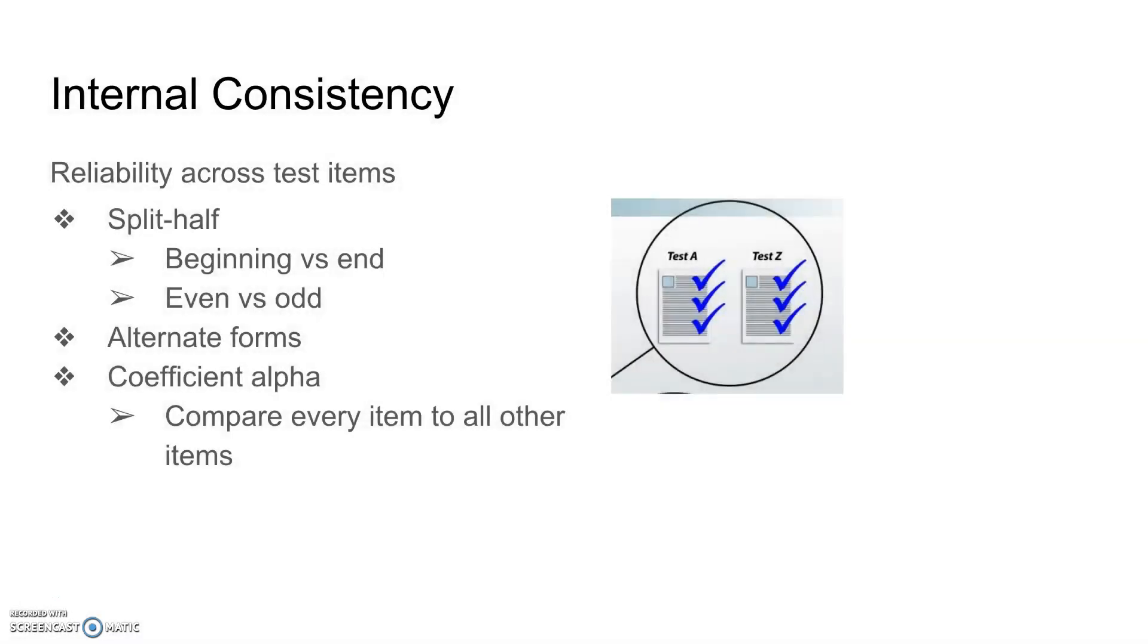The second type of reliability is internal consistency. This is reliability across test items within a test itself. There are three ways of determining internal consistency for a specific test. The first is split-half, so comparing one half of a test to another half of the test.